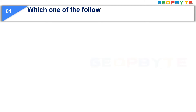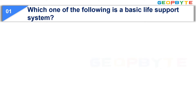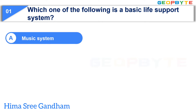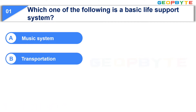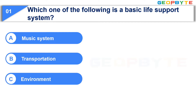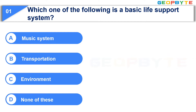The first question is: Which one of the following is a basic life support system? Option A: Music System. Option B: Transportation. Option C: Environment. Option D: None of these. Your time starts now.